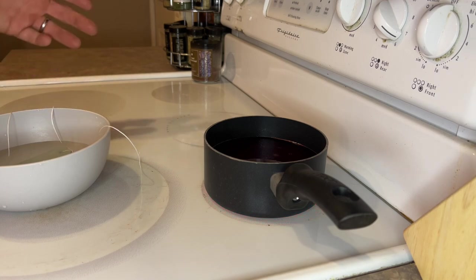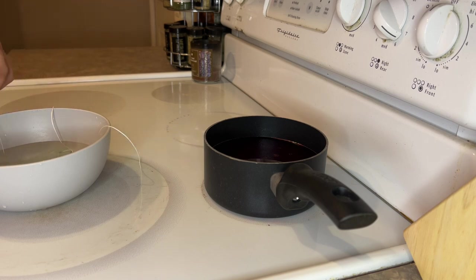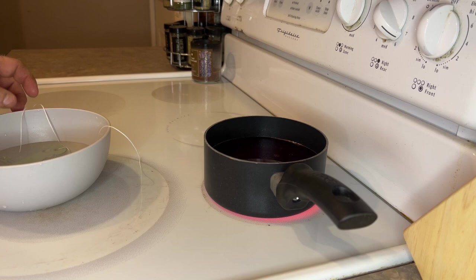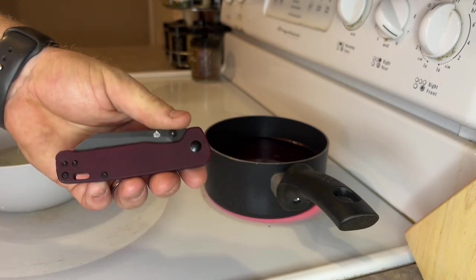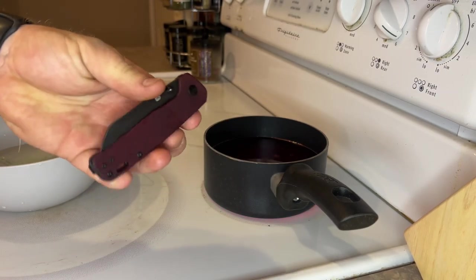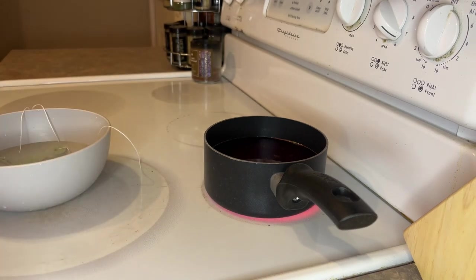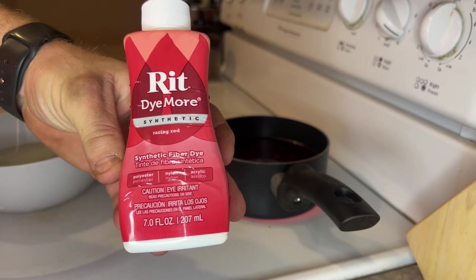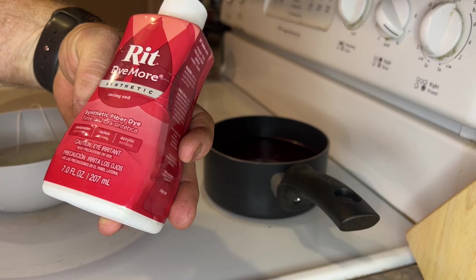We're going to be dyeing some G10 scales. One of our subscribers, Brad, sent us a knife - one of the F'n'Gro knives. He let me pick it out. It's kind of like a crossbar style lock, and we're going to be trying to pull off something similar to what Jimmy Crow does with his scales. This is a QSP Penguin that he dyed in synthetic racing red.